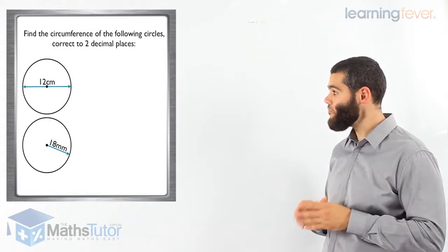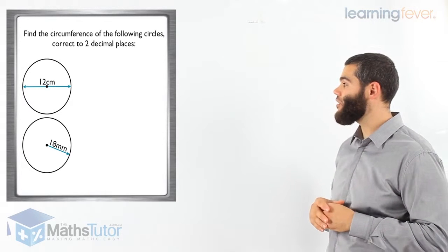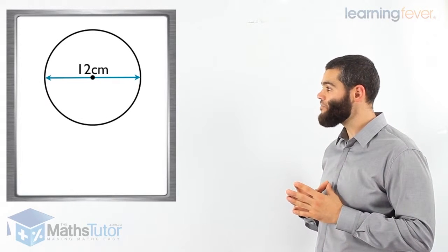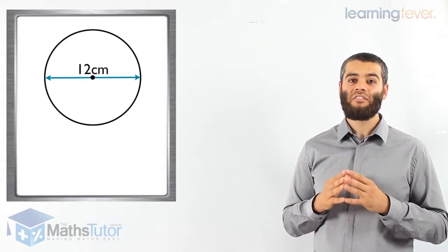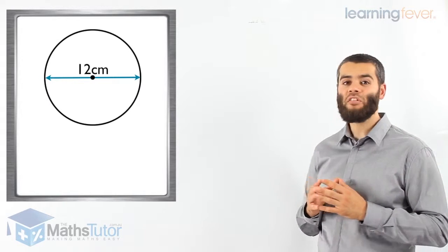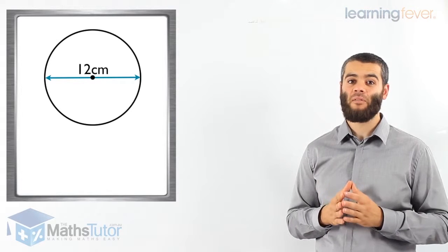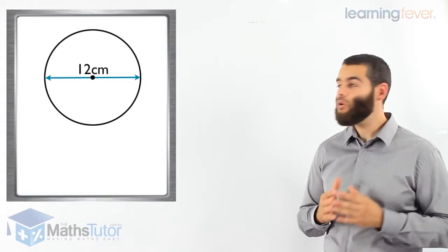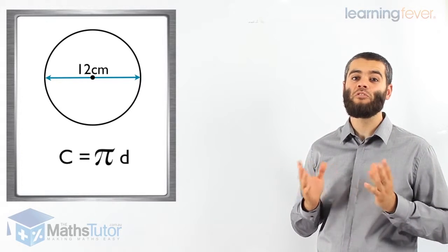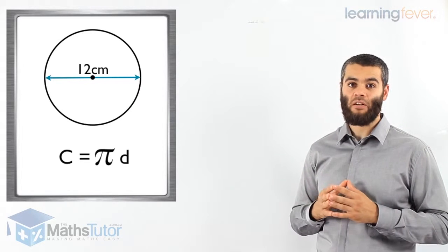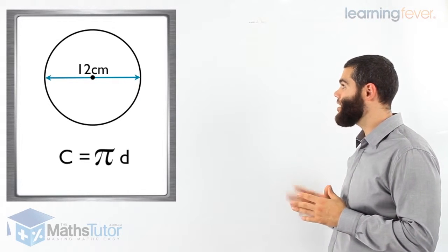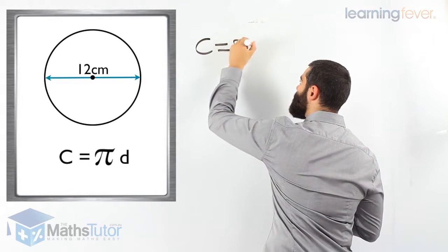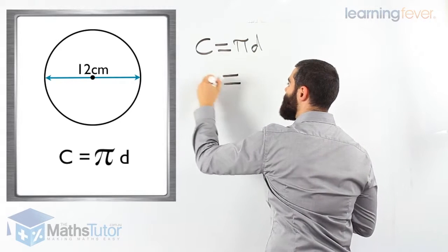The question says: find the circumference of the following circles, correct to two decimal places. For the first circle, we notice we have a diameter — the line that goes from one end of the circle to the other through the centre. The diameter here is 12 centimetres. We can use C equals 2 pi r or C equals pi d. Since we have the diameter, we're going to use C equals pi d. Always write your formula: C equals pi d, where C is our circumference.